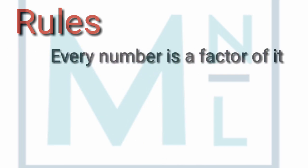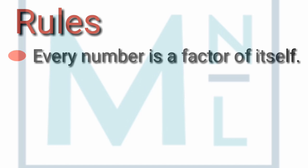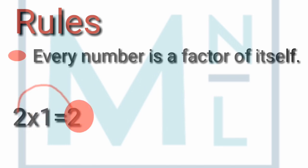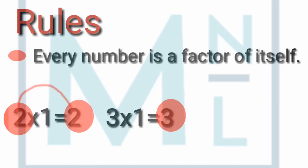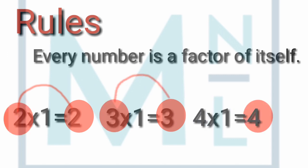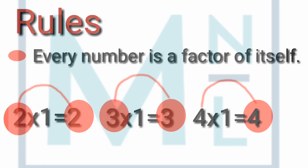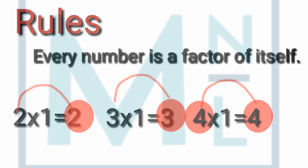Rule number three: every number is a factor of itself. That means if you find the factors of 4, then 4 will also be a factor of 4, because 4 appears in the table of 4. Similarly, whatever number you find the factors of, that number itself will automatically be its own factor. These are the three rules that describe factors. Let's practice.